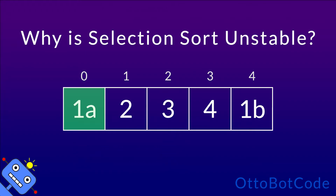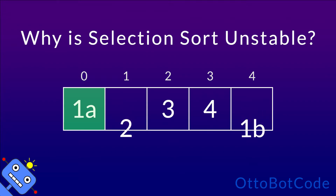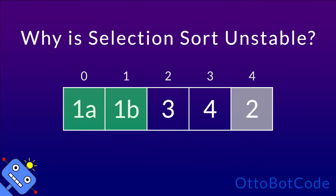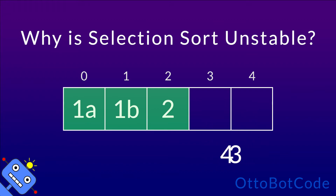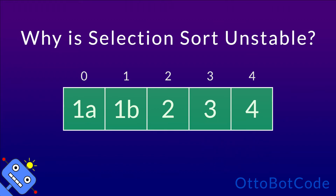Then in the second step, 1b will be picked and swapped with 2. We see that the relative order between 1a and 1b is preserved.